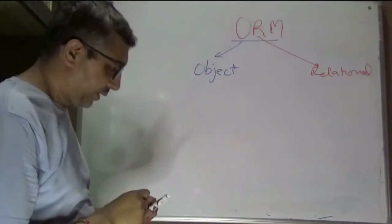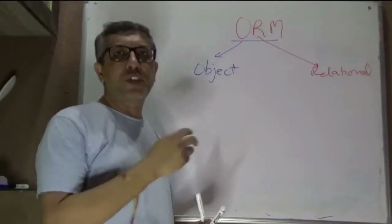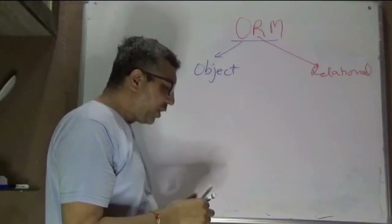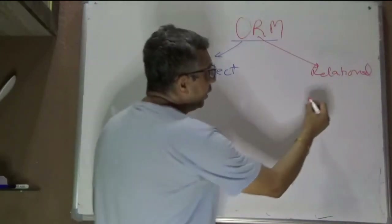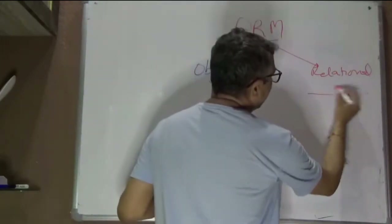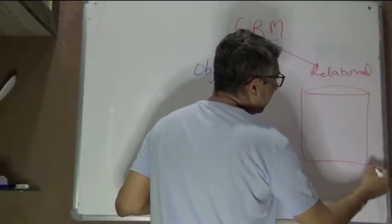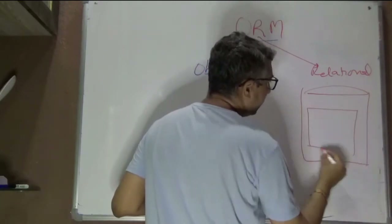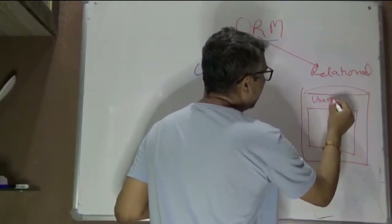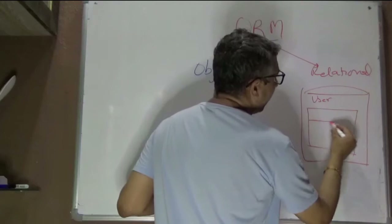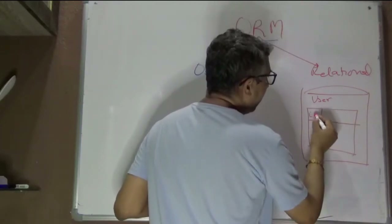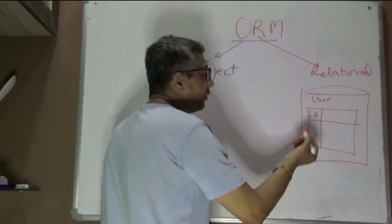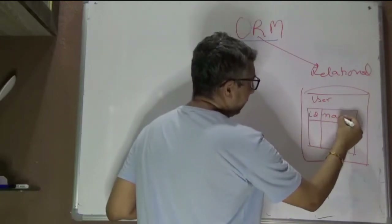Let's take an example to appreciate and understand this. On the relational side of the world, there is a database. There might be a table — let's say the table is 'user' — with different rows and columns. Let's say we have two columns: ID and name.